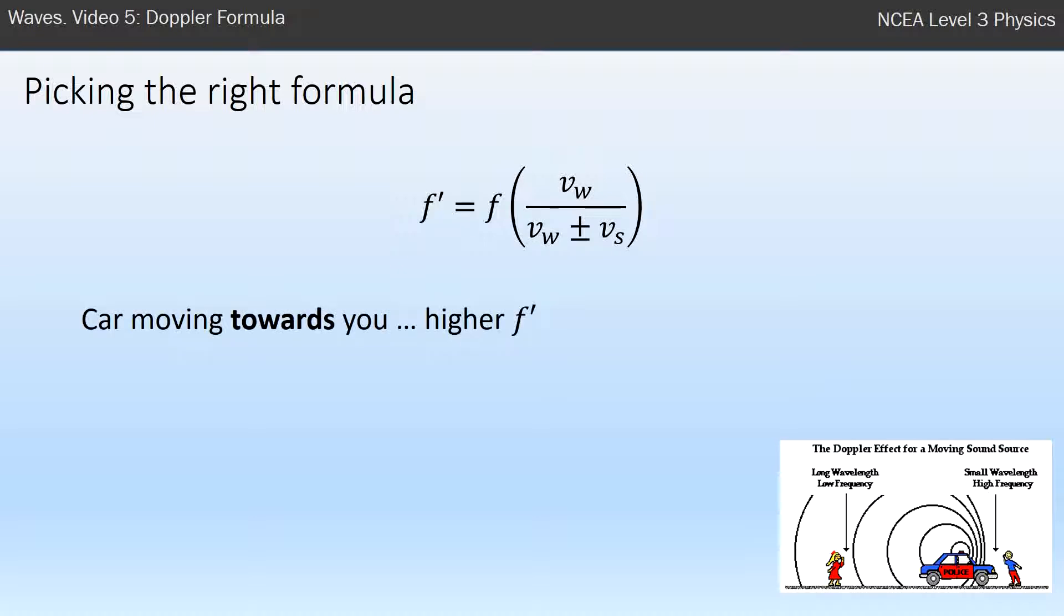Once you know that, you know that when a car moves towards you, you get a higher observed frequency. And to use the formula to get a high frequency, we need a small number on the bottom of a fraction. Whenever you divide by a small number you get a larger number. Whenever you divide by a large number you get a smaller number, so you have to know this math as well.